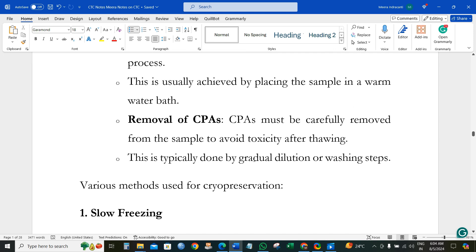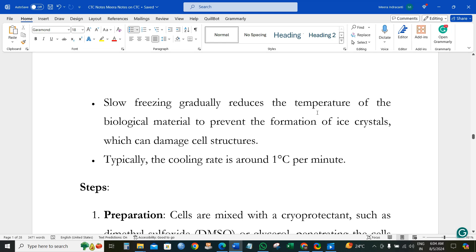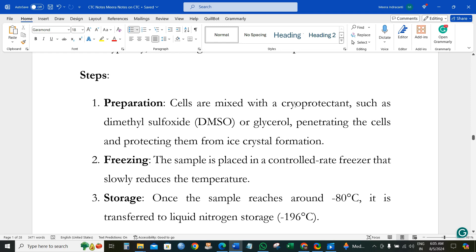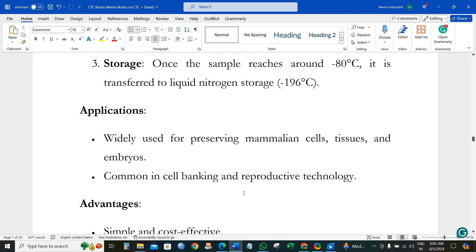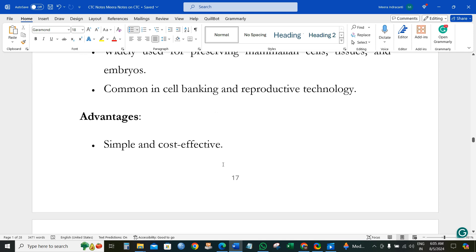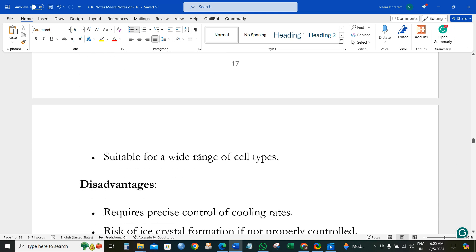Various methods include slow freezing, which generally reduces the temperature at a cooling rate of one degree centigrade per minute. Cells are mixed with cryoprotectant and placed in a controlled rate freezer. The temperature slowly reduces, and once it reaches minus 80 degrees centigrade, it is immediately transferred to liquid nitrogen at minus 196 degrees centigrade. This is a widely used technique for preserving animal cells and is also used in reproductive technology for storing different cells.